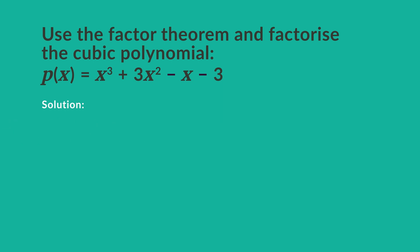Then we try x minus 1 and substitute to check if it equals zero. So x minus 1 is a factor of p of x.